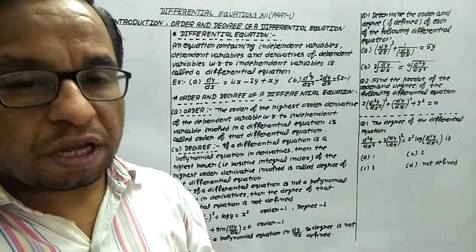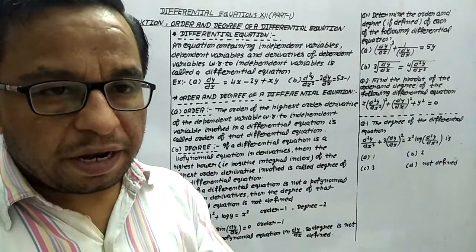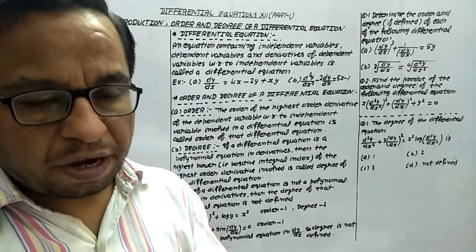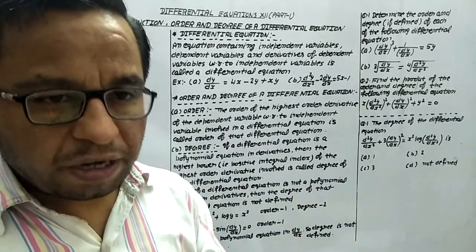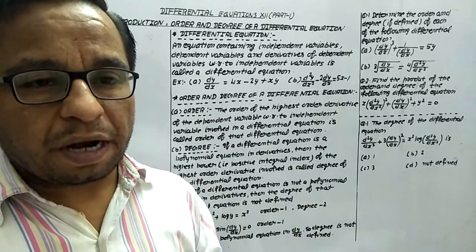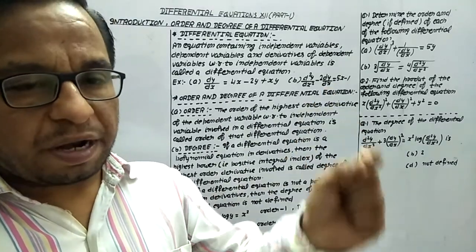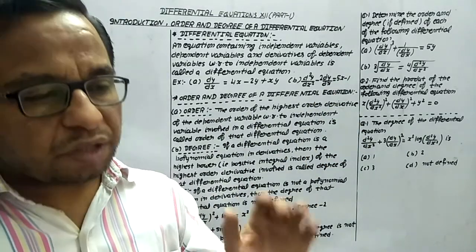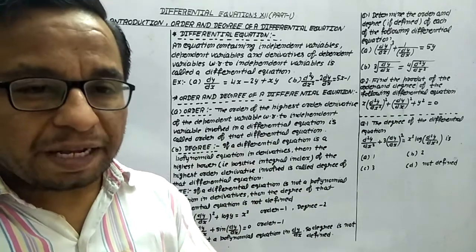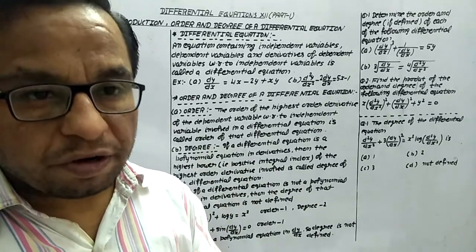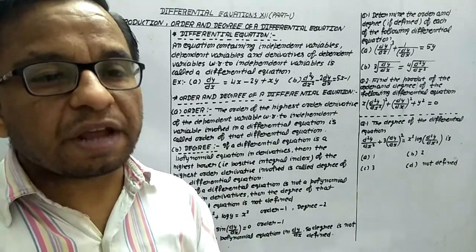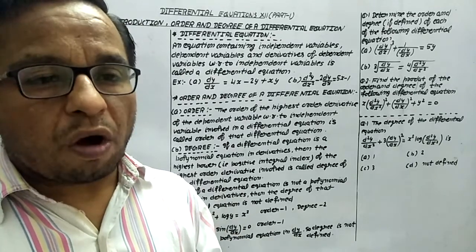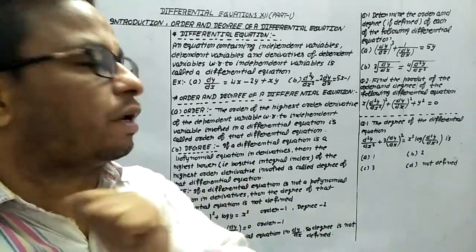One more thing to remember: if in any equation we have only one independent variable and only one dependent variable, along with the derivatives of the dependent variable with respect to the independent variable, then that equation is known as an ordinary differential equation. We will be learning about ordinary differential equations only.